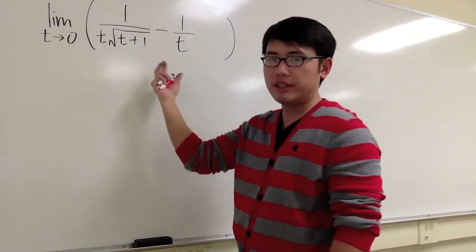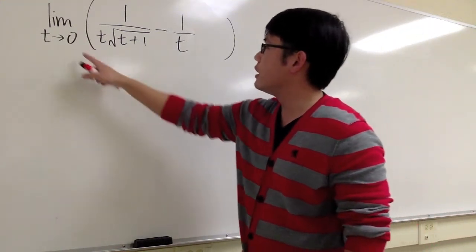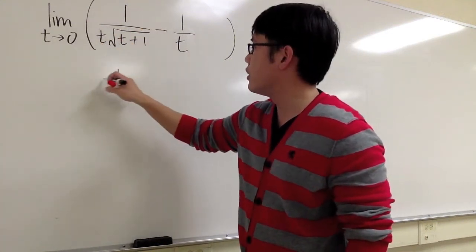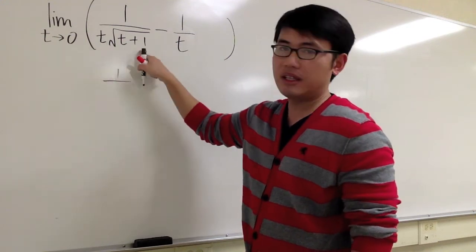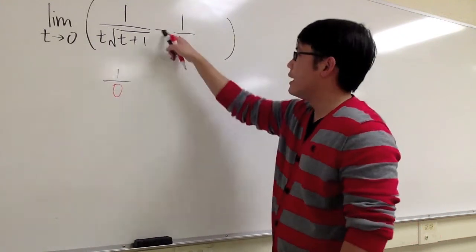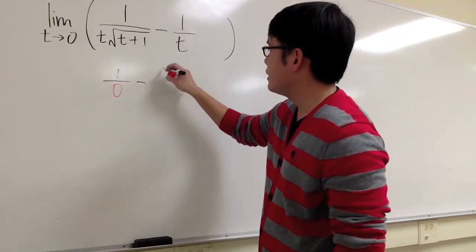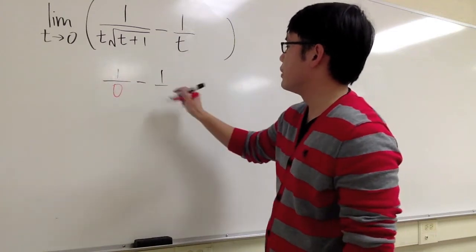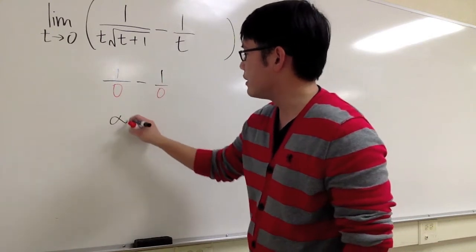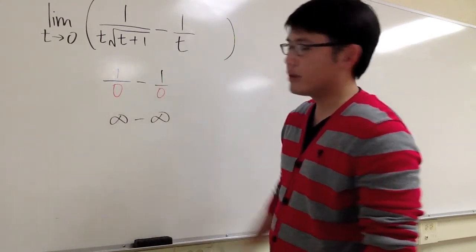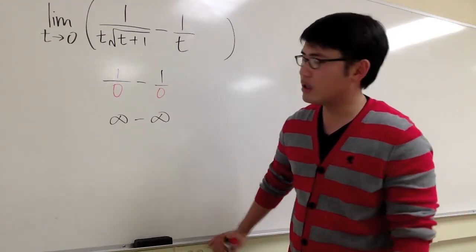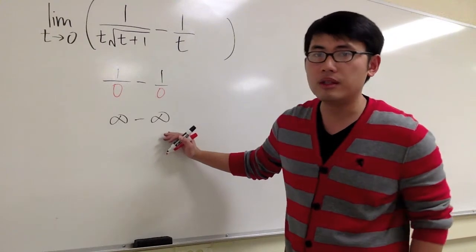Let's just plug in 0 into all the t's to see what we get. In the first fraction, plugging in 0 into t, we get 1 over 0 — since 0 times anything is 0, we have 0 on the bottom. And then minus 1 over t gives us 1 over 0 as well. 1 over 0 gives infinity, and minus 1 over 0 also gives infinity. Infinity minus infinity — we cannot make any conclusion.